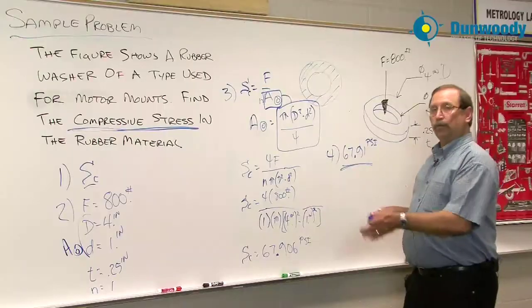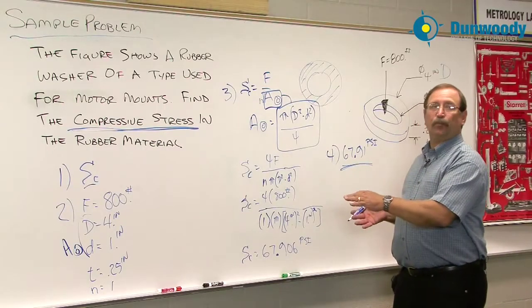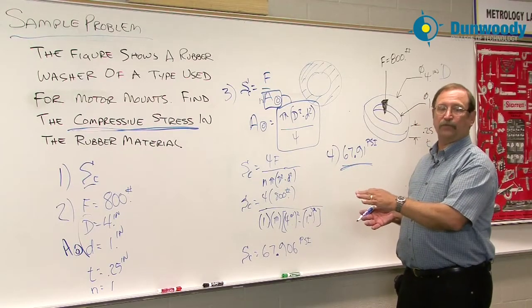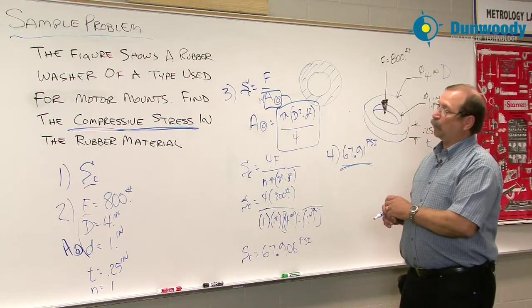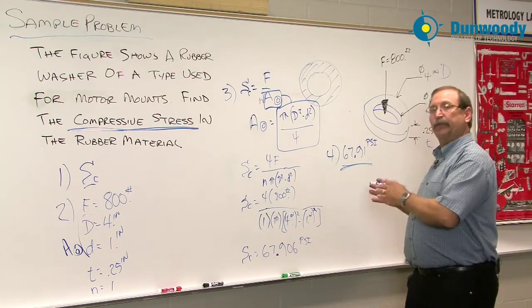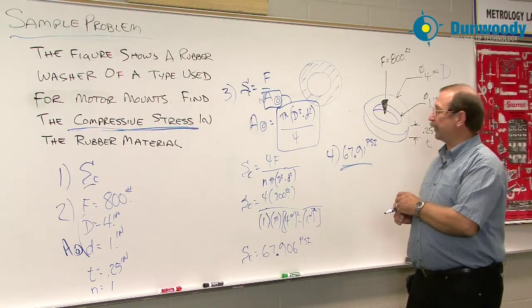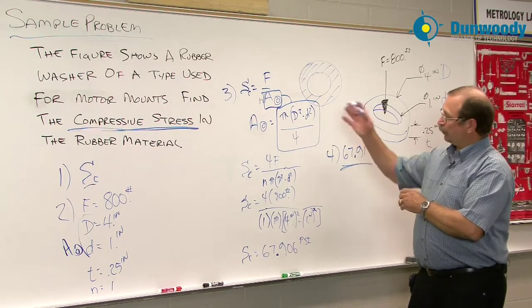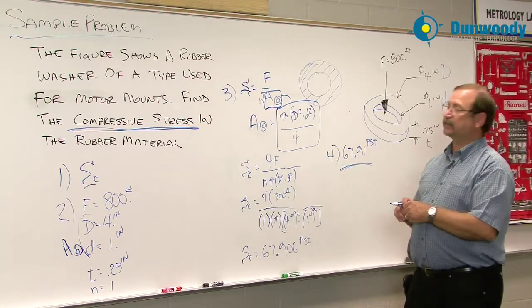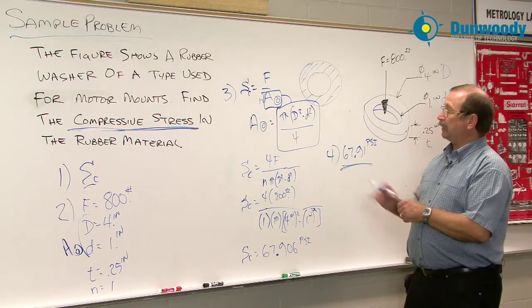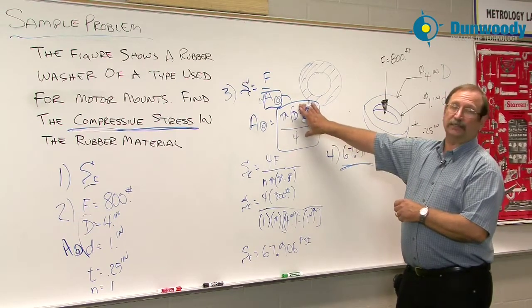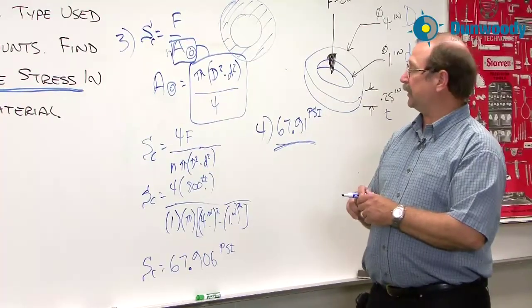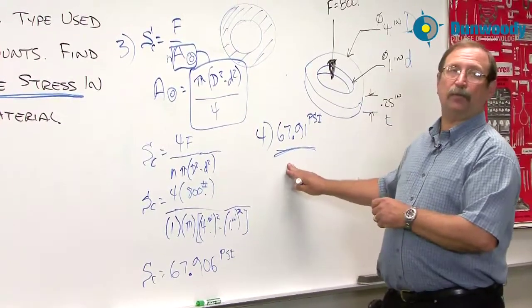Now this used the same documentation process, the four part problem solving method. We went into a little bit tougher type of an area that we're working with. And then we ran through the problem, did some transposing. I'm sorry, actually substitution in this case. We didn't have to transpose anything. And we came out with the number that we were looking for.